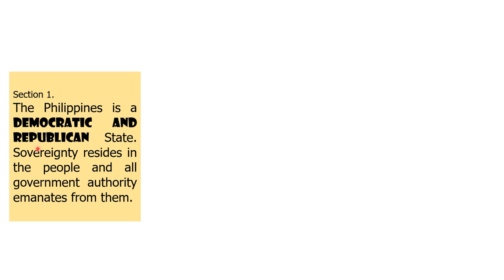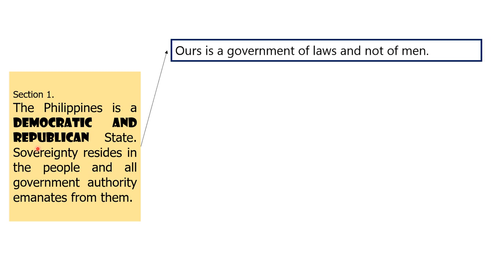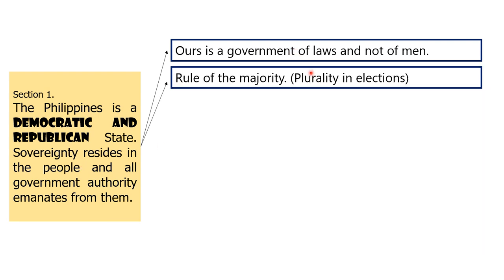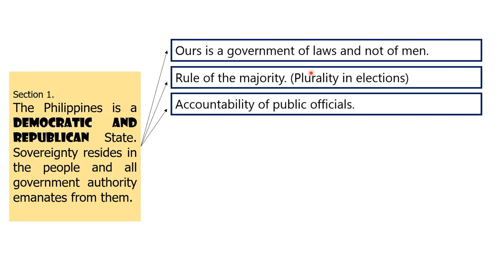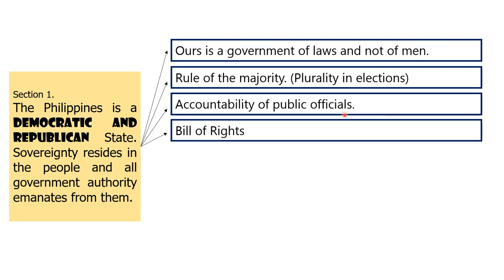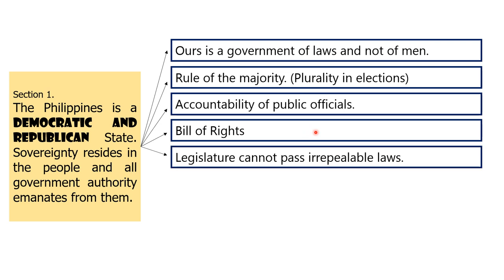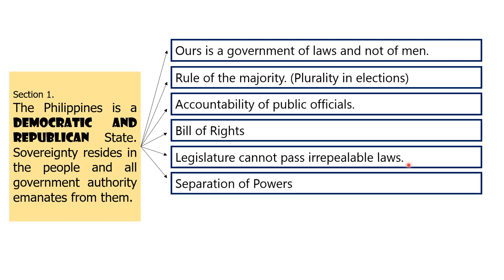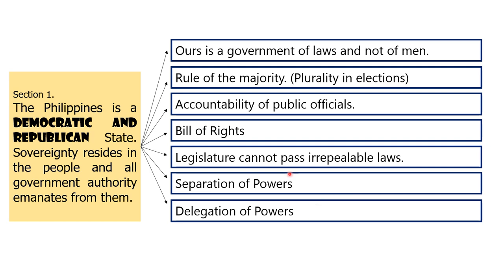How do you manifest republicanism? First, ours is a government of laws and not of men. Second, the rule of the majority — especially in elections, the rule is majority. Third, the accountability of public officials. Fourth, the Bill of Rights — our Bill of Rights is strict and must be followed. Fifth, the legislature cannot pass irrepealable laws. Sixth, the separation of powers. And last is the delegation of powers.